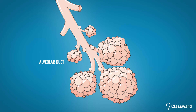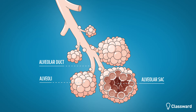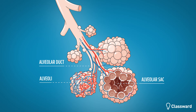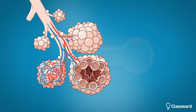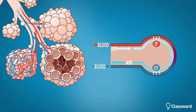The bronchioles terminate into individual alveolar ducts which contain alveoli, and it's here where gas exchange occurs. The alveolar ducts are connected to capillaries. Carbon dioxide diffuses from the deoxygenated blood into the air of the alveoli, and conversely, oxygen diffuses from the alveoli into the blood before it is ultimately pumped throughout the body.